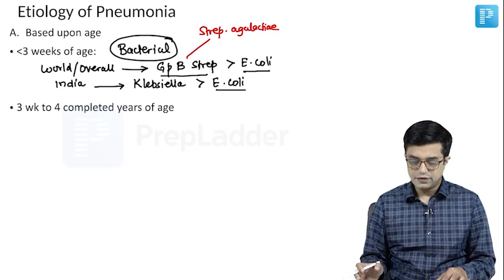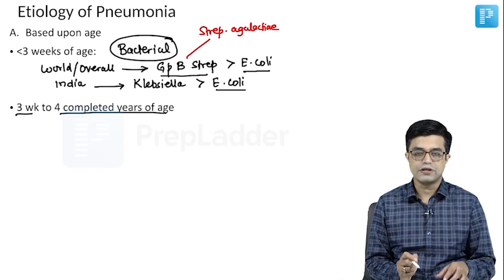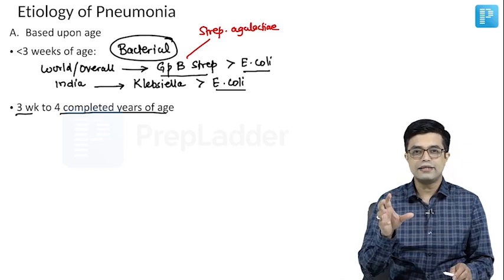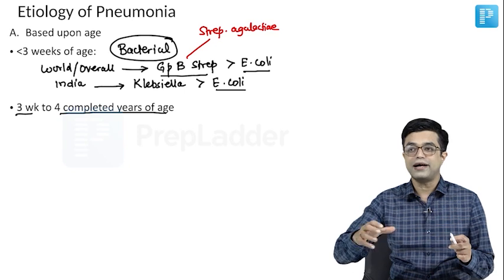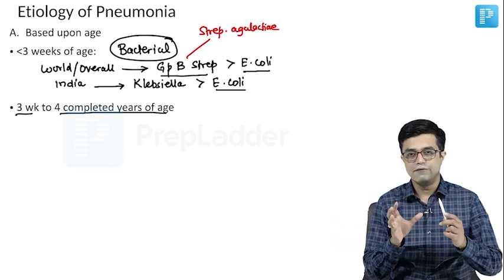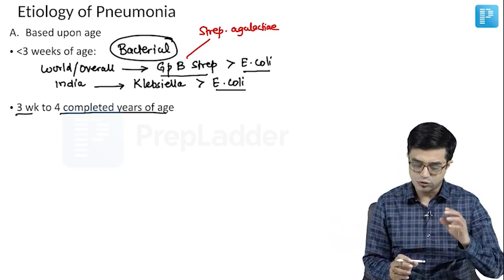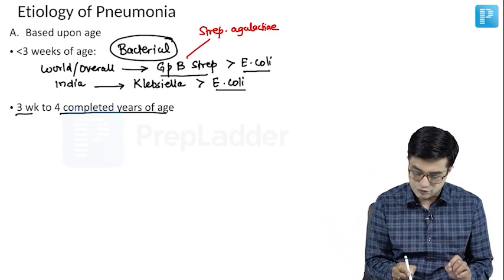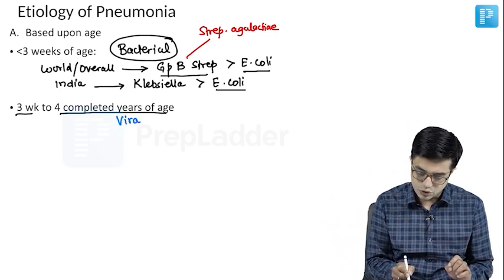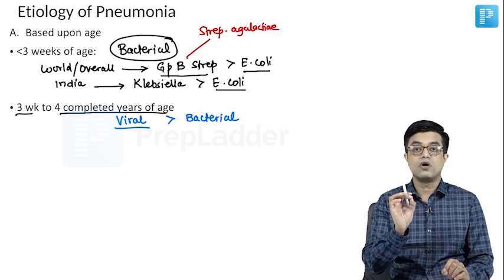Moving further, the second age group is three weeks to four completed years of age. Nelson has divided it into three weeks to three months and then three months to four years, but they repeat the same data. We will do it in a way that is easy to remember for exams. In this age group — three weeks to four completed years — please remember that viral causes are more common than bacterial causes.